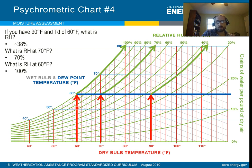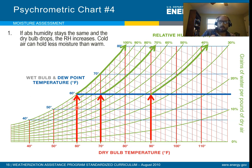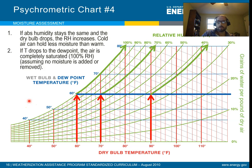And that's what defines the dew point — dew point is the temperature at which you reach 100% relative humidity, full saturation, when condensation starts to occur. If the absolute humidity stays the same and the dry bulb drops, the relative humidity increases, because cold air can hold less moisture than warm air. You warm the air up, relative humidity drops; cool it down, relative humidity increases. Drop the temperature all the way down to the dew point and you get 100% relative humidity — full saturation. This is assuming no moisture is added or removed.